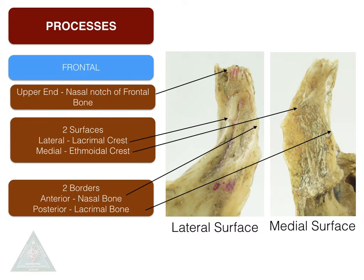The lateral surface is marked by the lacrimal crest. It divides into two parts — an anterior part and a posterior part, which gives origin to the orbicularis oculi muscle. The medial surface is marked by the ethmoidal crest, which articulates with the ethmoid bone. The two borders present are an anterior border which articulates the nasal bone, and a posterior border which articulates the lacrimal bone.